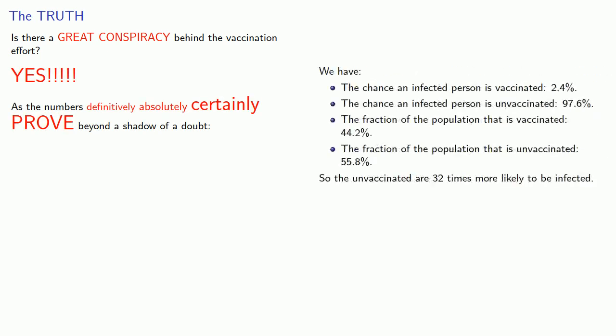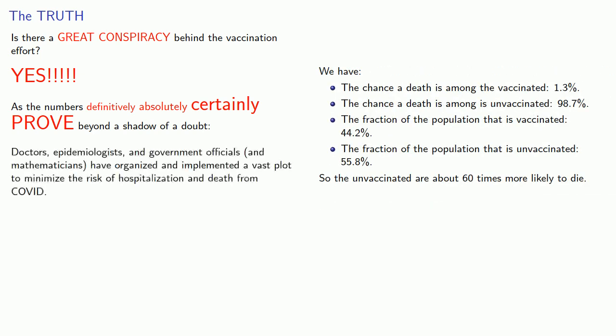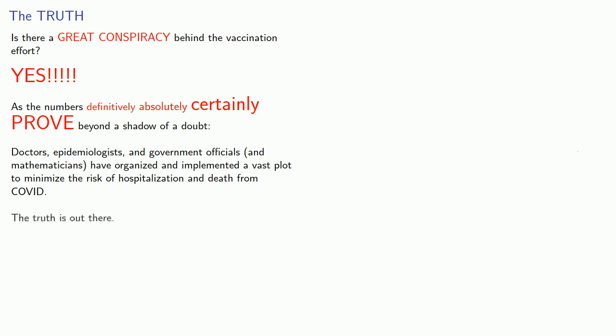And now, what you've all been waiting for, the truth. Is there a great conspiracy behind the vaccination effort? Yes, absolutely. As the numbers definitively, absolutely, certainly prove beyond a shadow of a doubt. Doctors, epidemiologists, and government officials, and mathematicians have organized and implemented a vast plot to minimize the risk of hospitalization and death from COVID. The truth is out there.